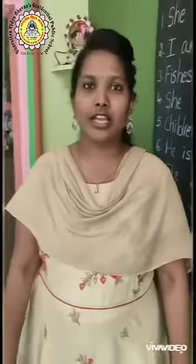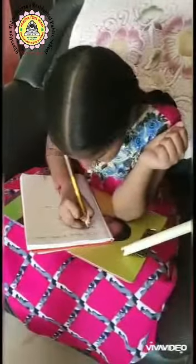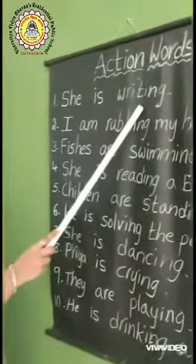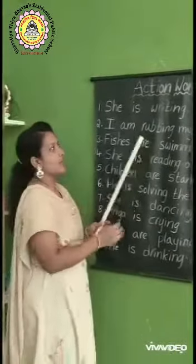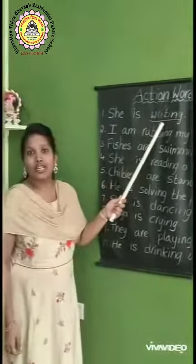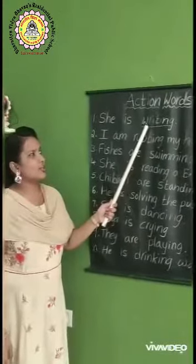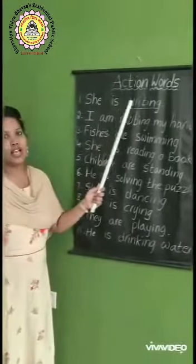Let us see how we are using these action words in our daily lives. Here are some action words with some examples. What is she doing? She is writing. So, what is the action word here? Writing. Very good. I am underlining — the action word is writing. W-R-I-T-I-N-G. She is writing.